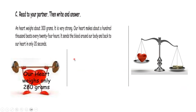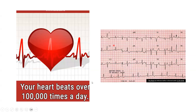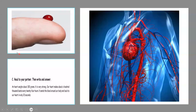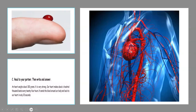Your heart beats over 100,000 times a day. It sends the blood — this is the blood — and the heart sends the blood around our body and back to our heart in only 20 seconds. This is the blood that goes from the heart to our body and from our body again back to the heart.